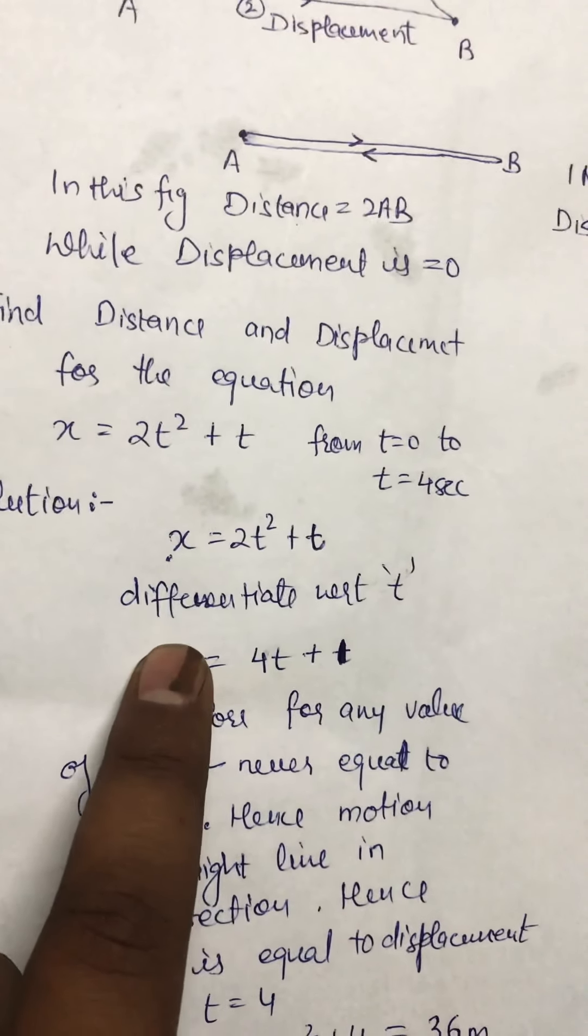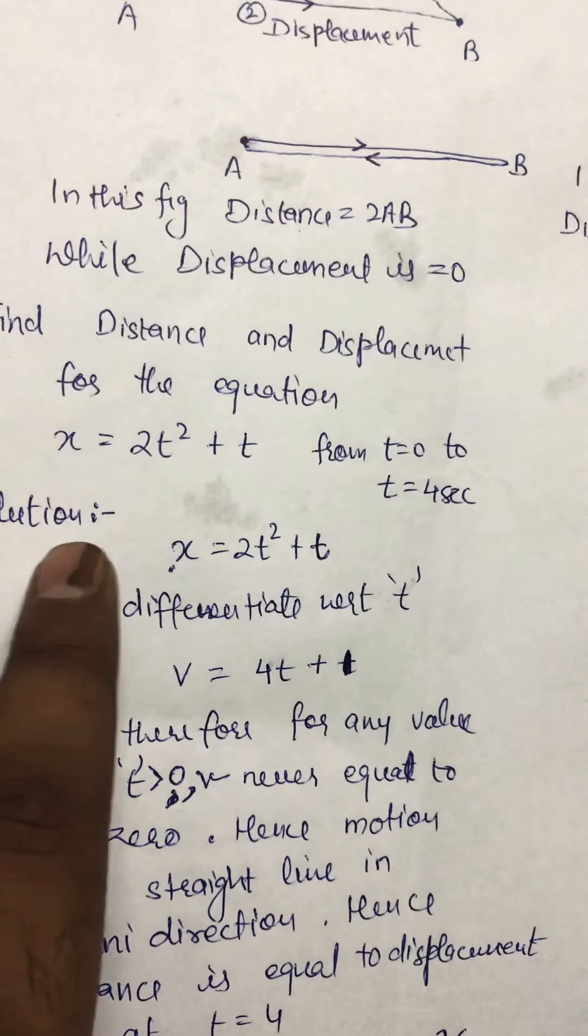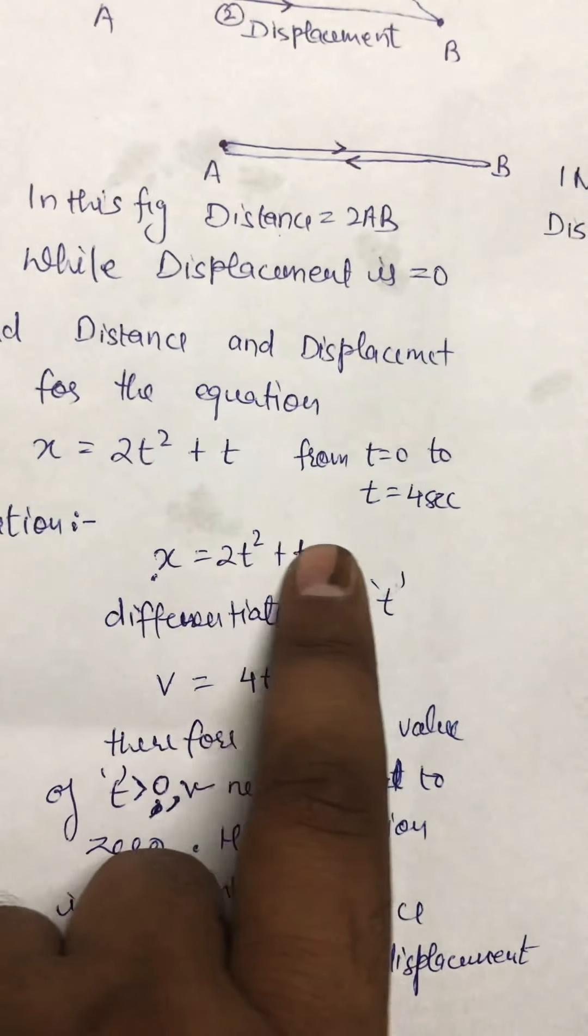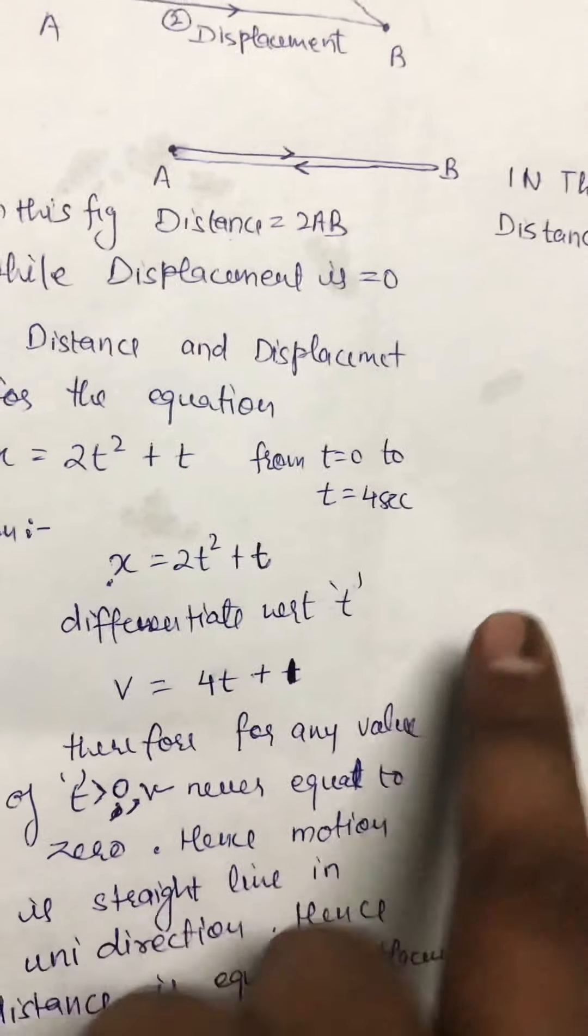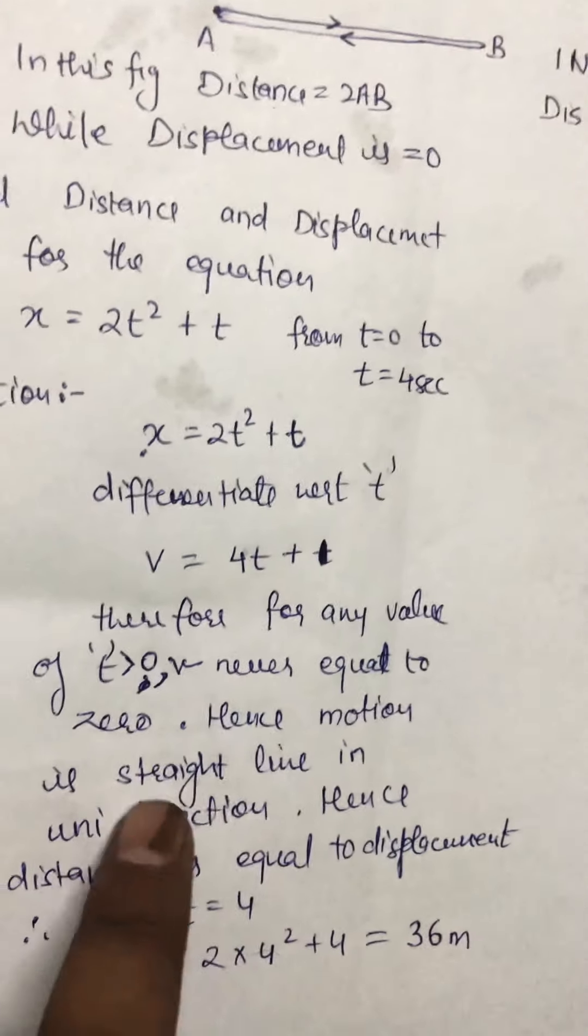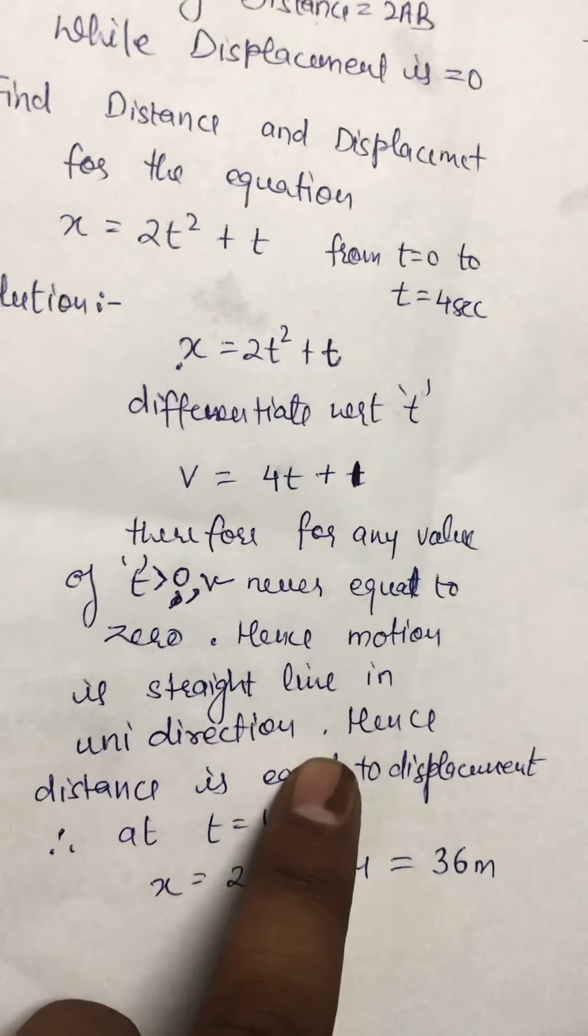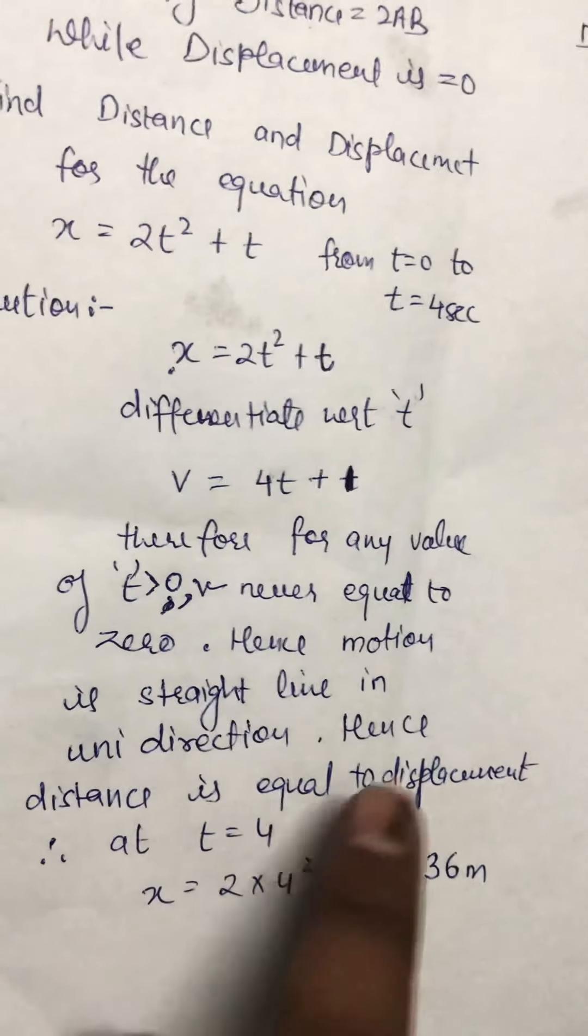As velocity never equals zero, the body continues to move in a straight path along the positive x-axis. Hence the motion is straight line in one direction. Hence distance equals displacement.